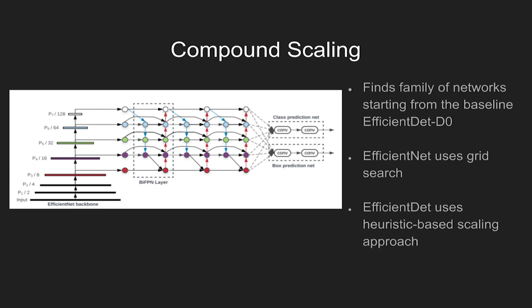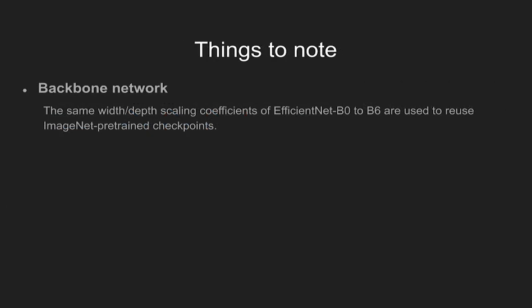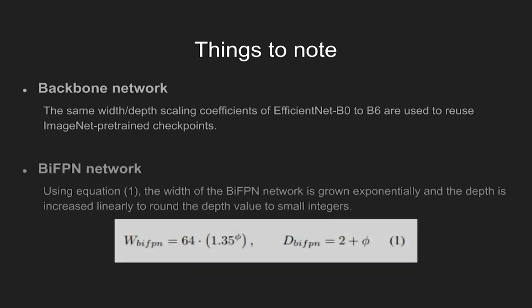Grid search was used in the EfficientNet paper, but a heuristic-based scaling approach is used in EfficientDet. This is because object detectors have much more scaling dimensions than image classification models. Here are some things to note about the paper: To reuse ImageNet pre-trained checkpoints, width and depth of EfficientNet B0 to B6 are scaled with the same coefficient. Using equation 1, the width of the BiFPN network is grown exponentially, and the depth is increased linearly to round the depth value to small integers.